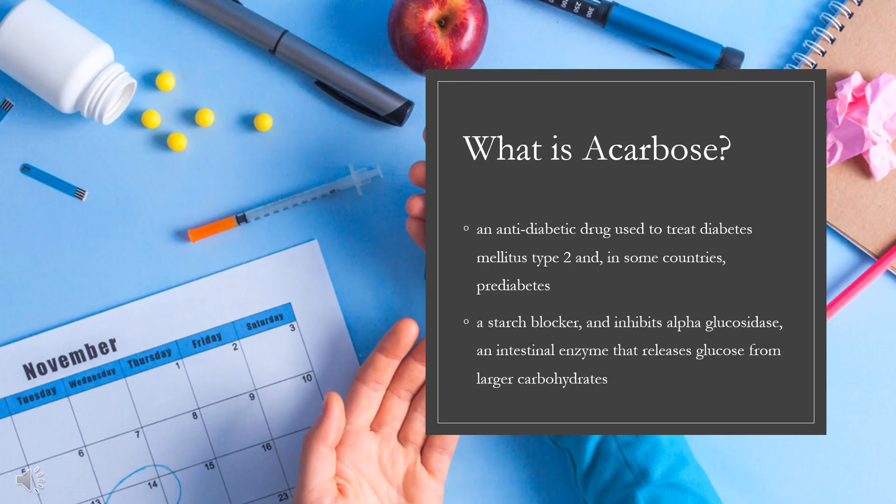What is acarbose? Acarbose is an anti-diabetic drug used to treat diabetes mellitus type 2 and, in some countries, prediabetes. It is a generic sold in Europe and China as Glucobae, in North America as Precose, and in Canada as Prandase. It is cheap and popular in China, but not in the US.